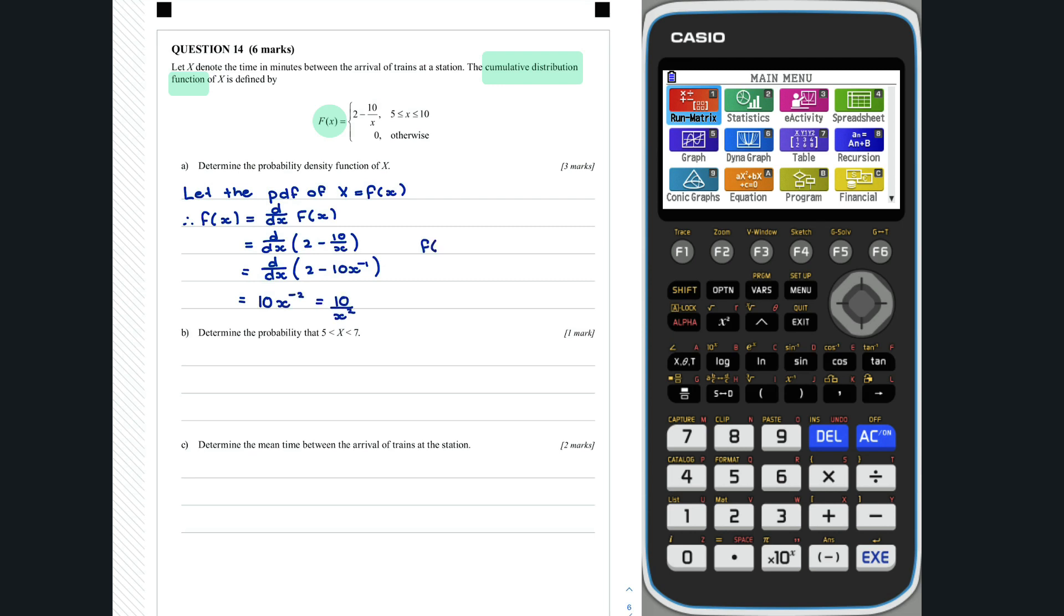Thus, the pdf of x is 10 over x squared, for x between 5 and 10 and 0 otherwise.